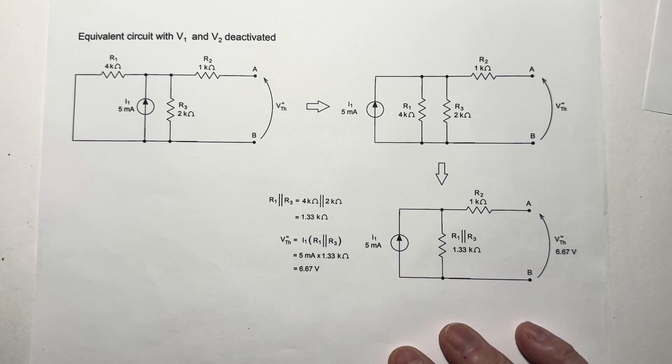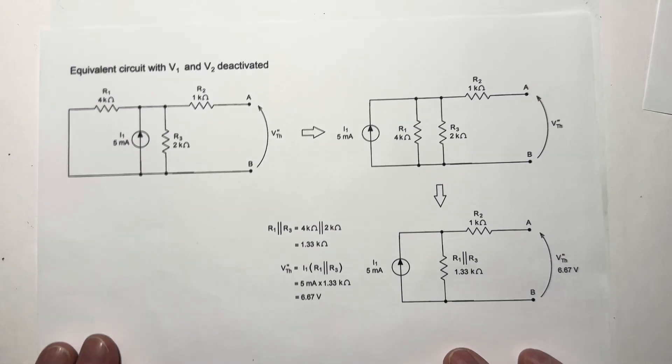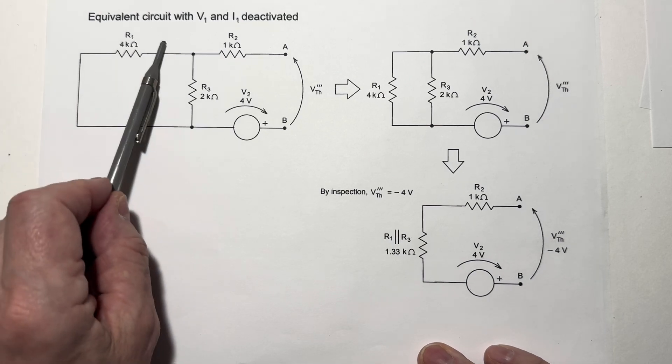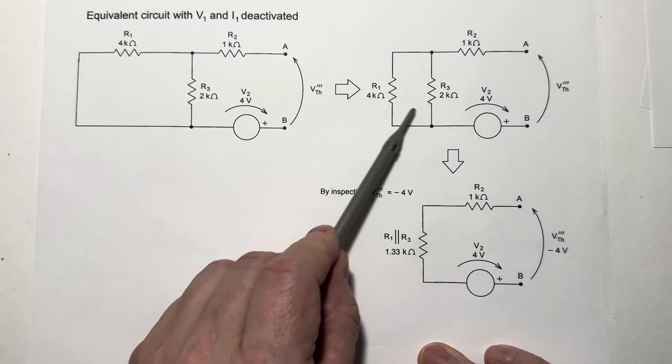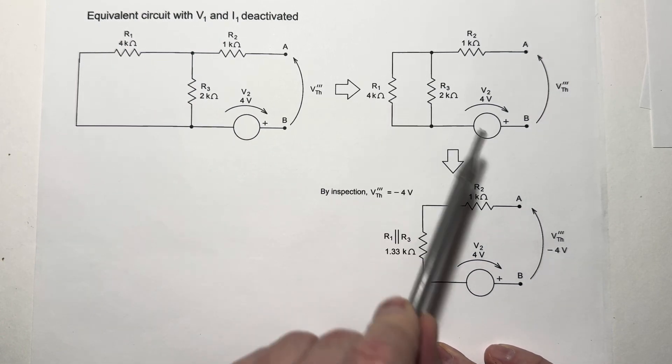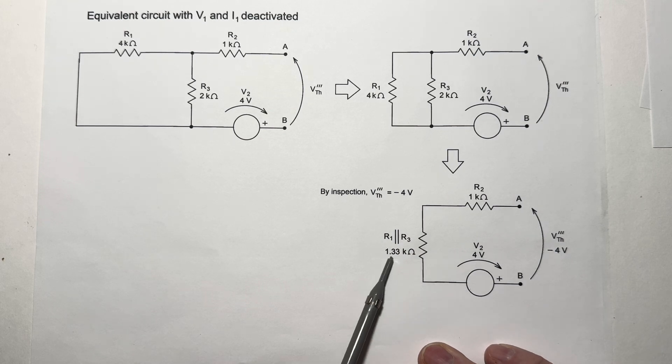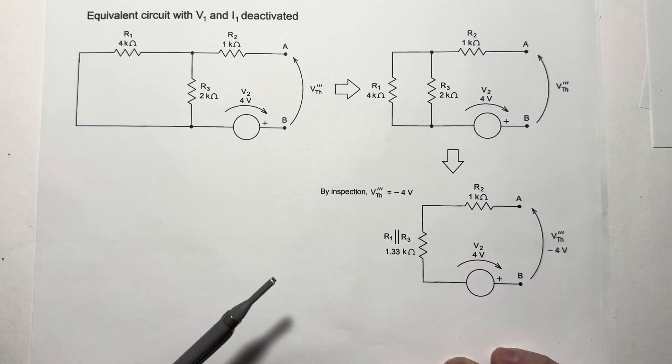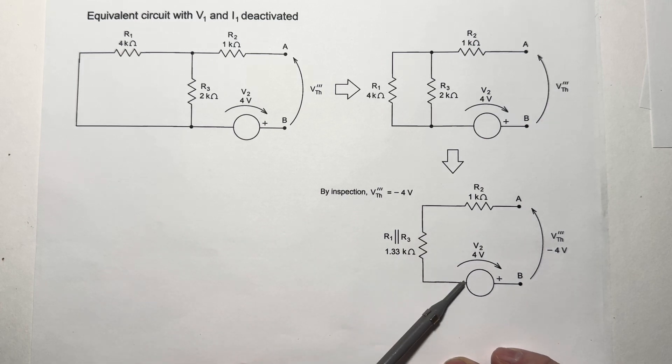For the third step, we're going to deactivate V1 and I1, reactivate V2. Here's the equivalent circuit we get. Now, R1 and R3 are again in parallel with each other. So if I redraw the circuit to emphasize that, we see we have, again, 4K in parallel with 2K, which gives us 1.33K ohms, and we have a voltage source with no current flowing through the circuit because it's open. So with 4 volts here, we're going to get minus 4 volts as our third Thevenin component because this voltage sensing arrow is looking at the negative side of this source. No voltage dropped here. No voltage dropped here. We've got negative 4 volts for that component.